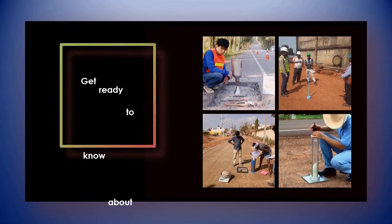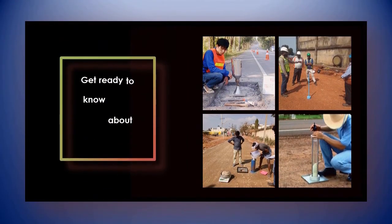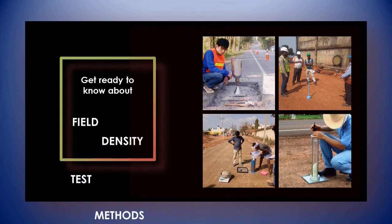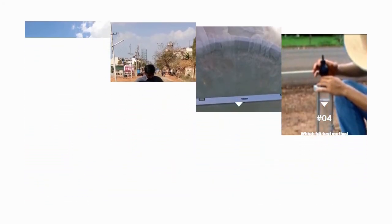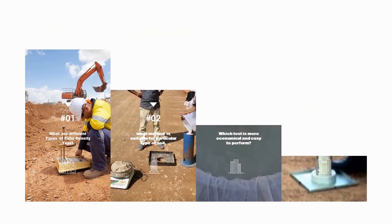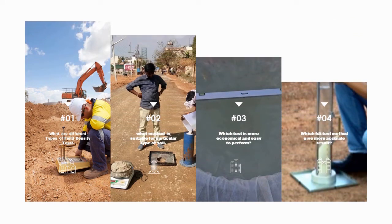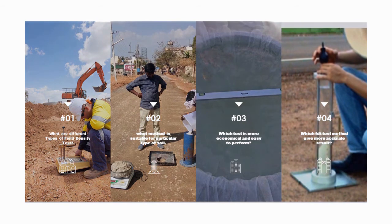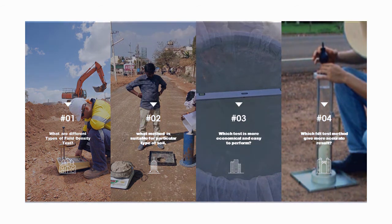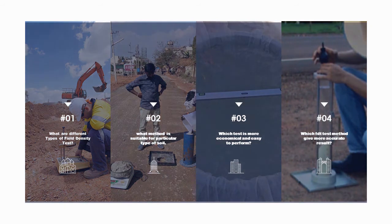Discussing all of the above methods is out of the scope of this video, so my main focus will be on the different types of FDT methods. I'll be answering questions like: What are the different field density test methods? What method is suitable for a particular type of soil? Which test is more economical and easy to perform? Which FDT method gives more accurate results? So let's dive in.